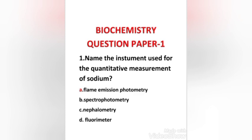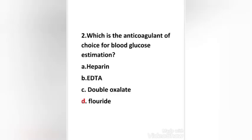Next question: Which is the anticoagulant of choice for blood glucose estimation? Options: heparin, EDTA, double oxalate, fluoride. Right answer is option D: fluoride.